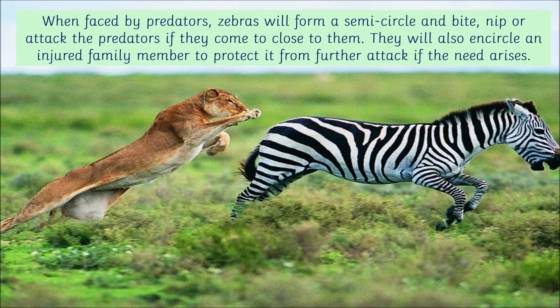When faced by predators, zebras will form a semicircle and bite, nip or attack the predators if they come too close to them. They will also encircle an injured family member to protect it from further attack if the need arises.